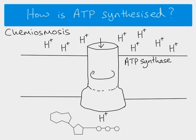So in chemiosmosis: by building up a hydrogen ion gradient and moving hydrogen ions through ATP synthase, that movement of hydrogen ions provides the energy which allows the bond to be made, forming ATP. That's how chemiosmosis works. That's an overview of ATP — what it is and how it's synthesized.